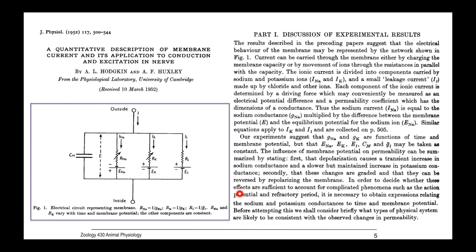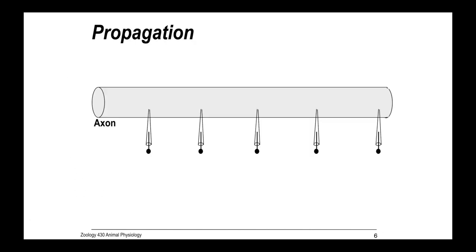This is all this really intricate stuff that they figured out. In order to decide whether these effects are sufficient to account for complicated phenomena, such as the action potential and the refractory period, it's necessary to obtain expressions relating the sodium and potassium conductances to time. Timing is really important. And membrane potential. Before attempting this, we shall briefly consider what types of physical system are likely to be consistent with the observed changes in permeability.